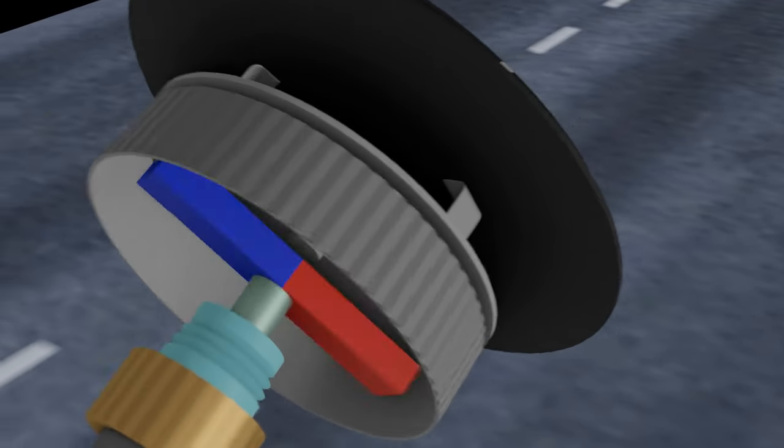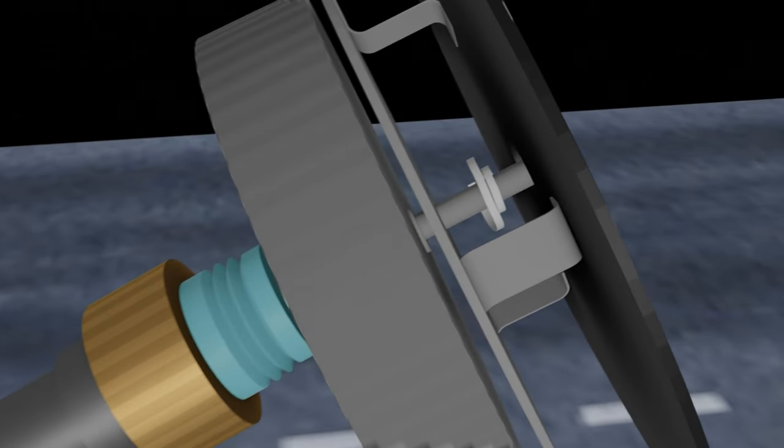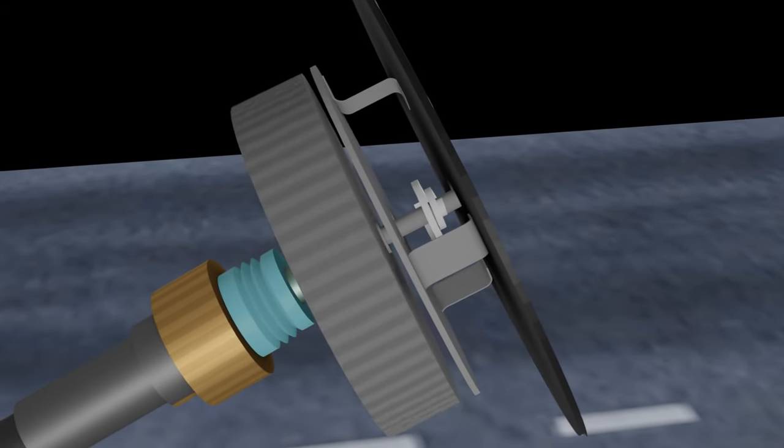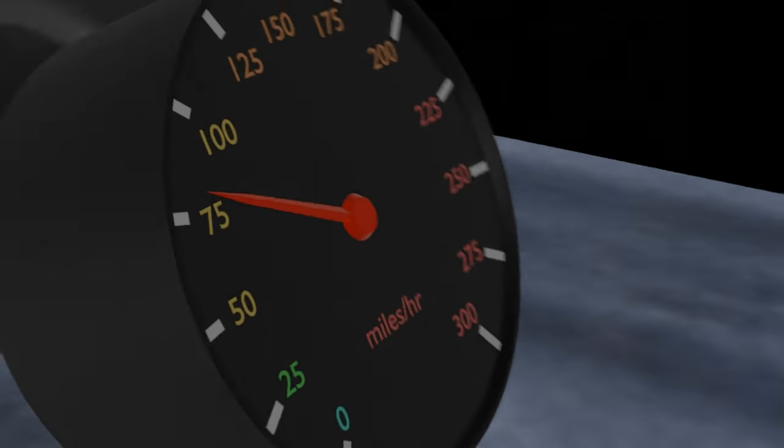How? The currents make the speed cup rotate in such a way that it tries to catch up with the spinning magnet. But the hairspring stops the cup from rotating very far, so it just turns a little bit instead, pulling the pointer up the dial as it does so.